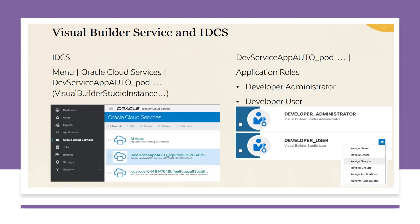The steps are: go to the Identity Cloud Service portal, which is available for every instance, and log in with OCA credentials. Then select the environment — the dev service app — and inside that, go to the roles: Developer Administrator or Developer User. From here you can add users or groups. If these roles are assigned from the IDCS side, then Visual Builder access will be granted.